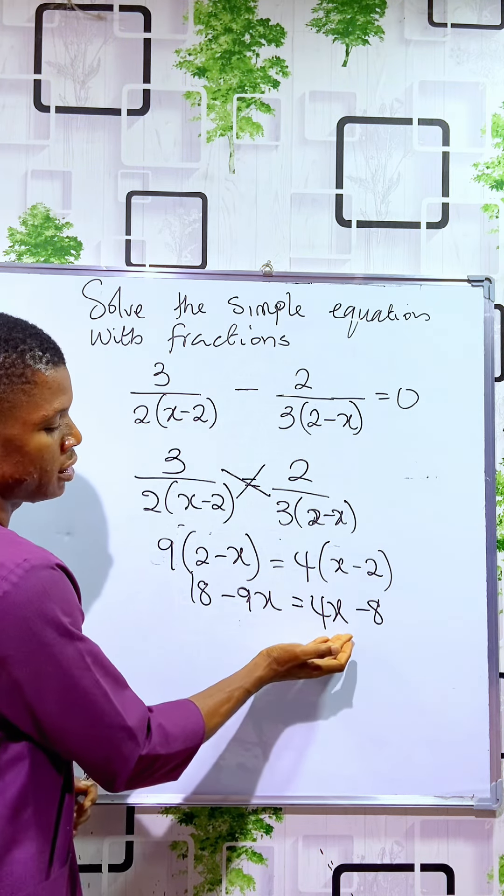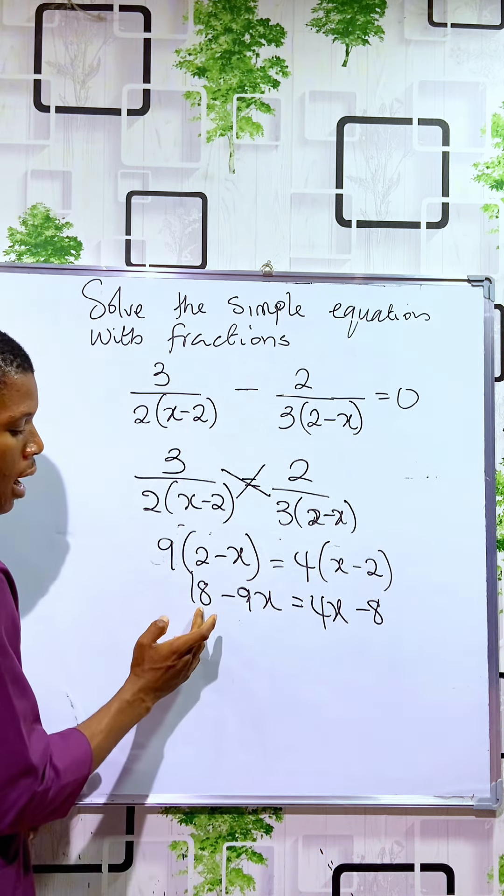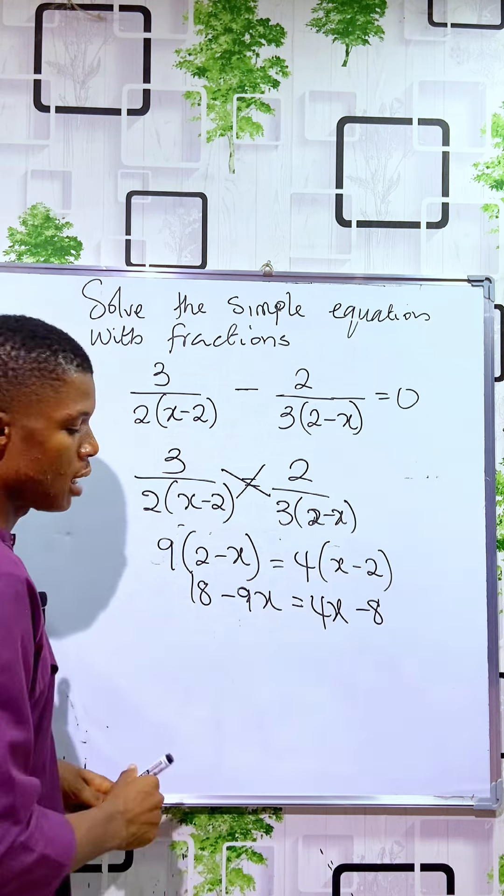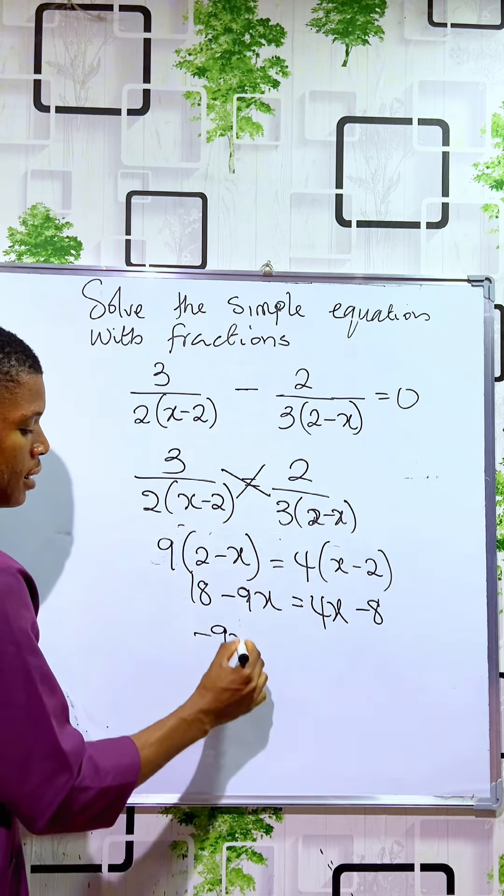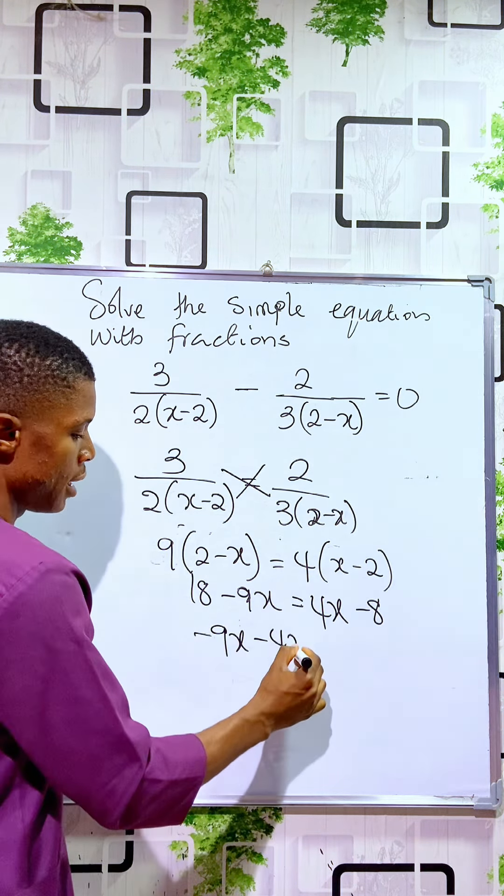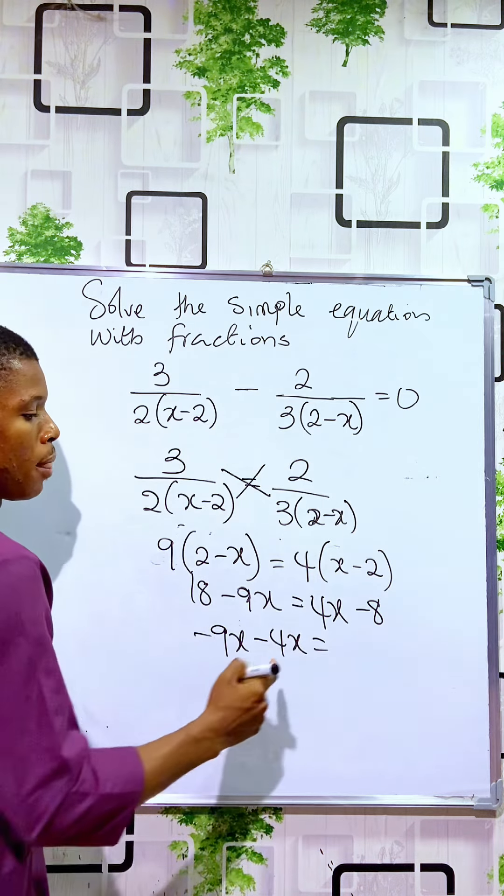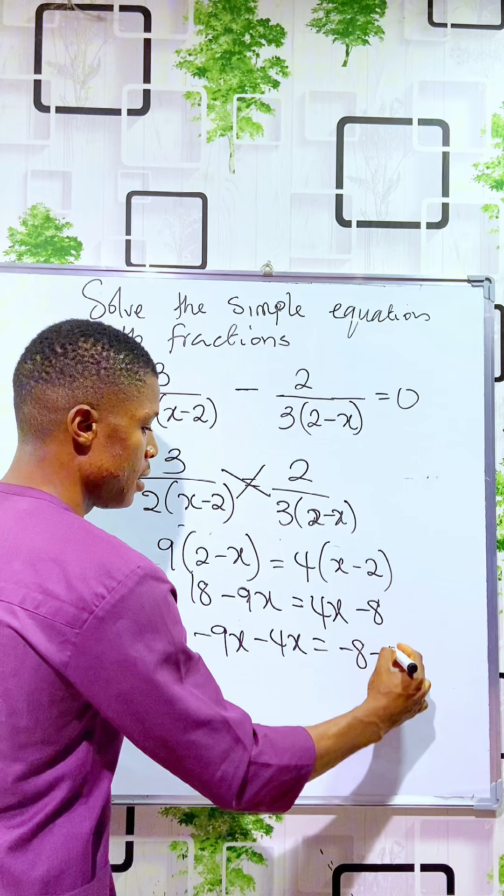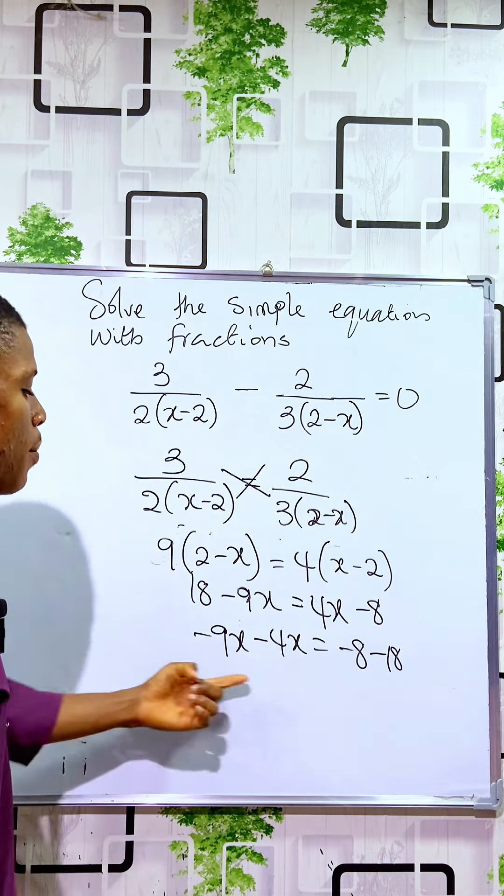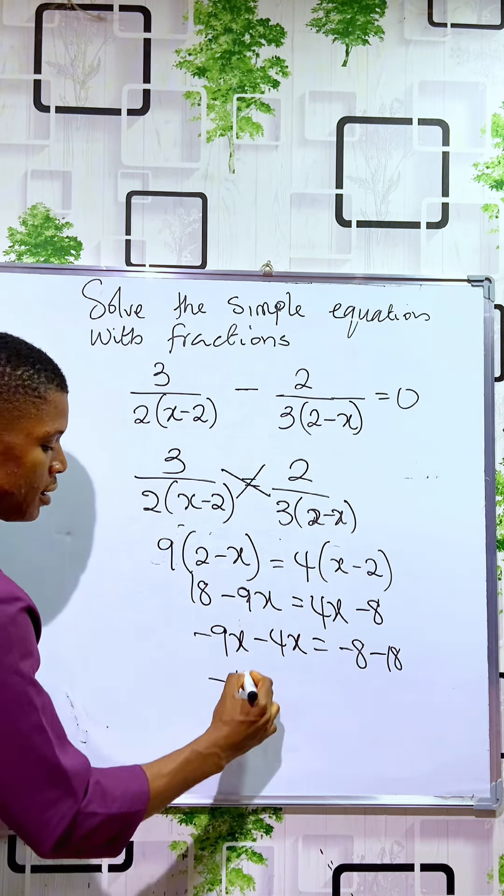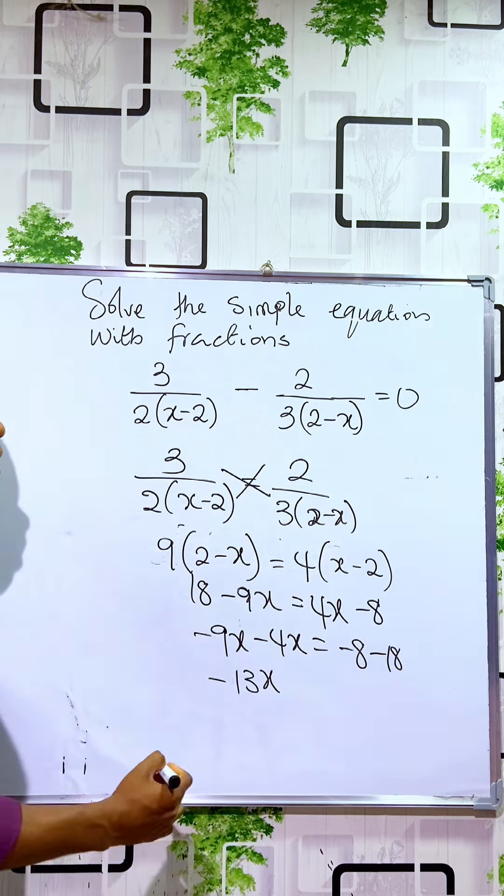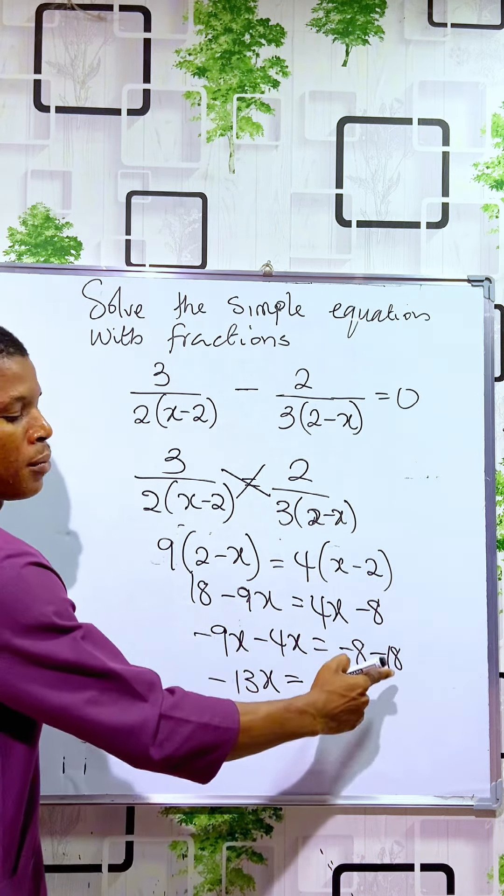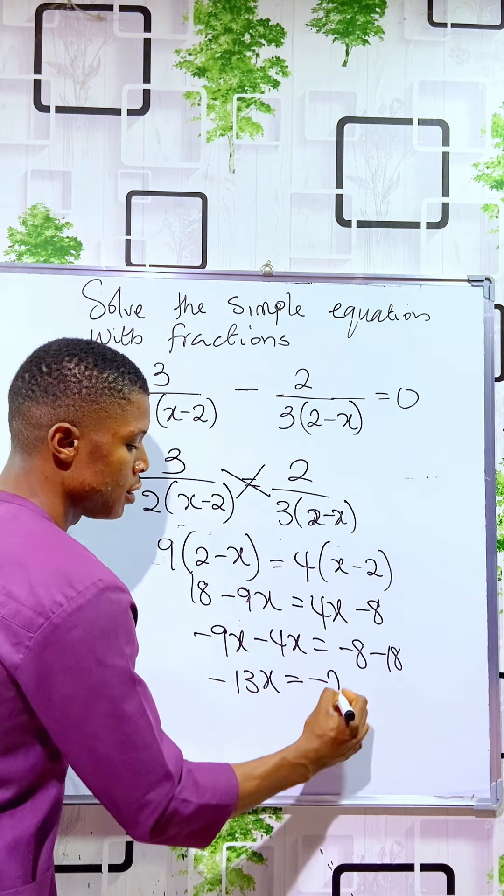To collect like terms we just have to minus 4x from both sides, so we have minus 9x minus 4x, we have minus 8 minus 18. So if you minus you are having minus 13x is equal to minus 26.